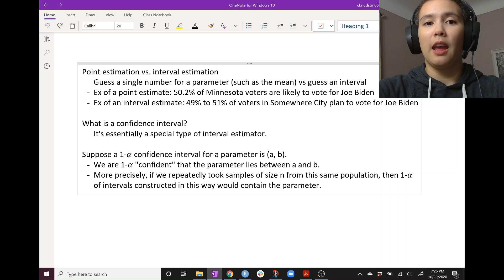So if we're creating a 95% confidence interval for the proportion of voters who plan to vote for Joe Biden, then we could say that if we repeatedly took samples of size N, whatever N is in our original data set, then 95% of intervals constructed in this way would contain the true proportion of voters who plan to vote for Joe Biden. So we'll get some practice with that, and this will lead us into our bootstrapping.